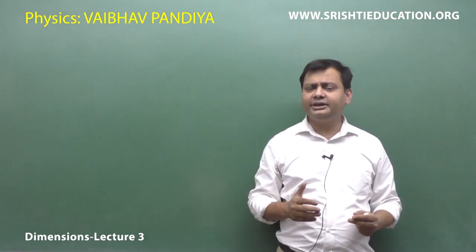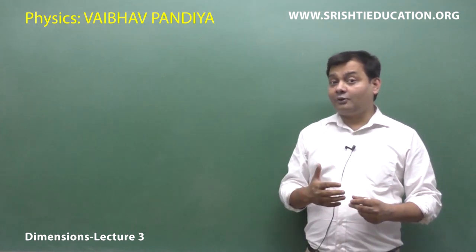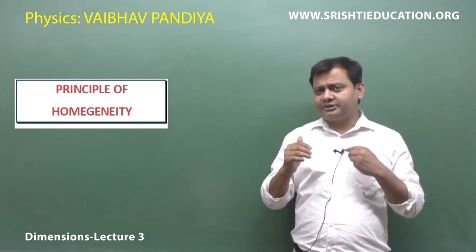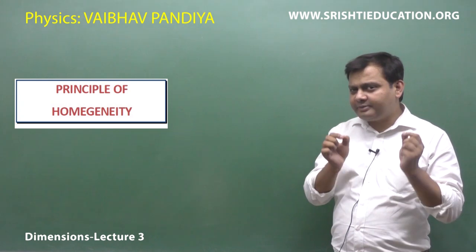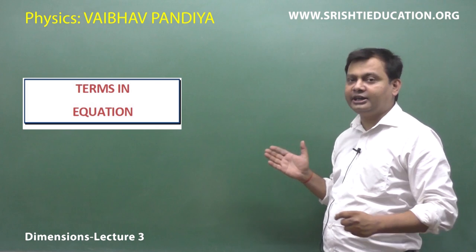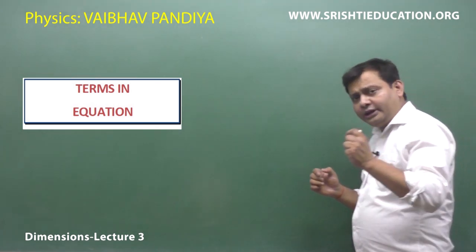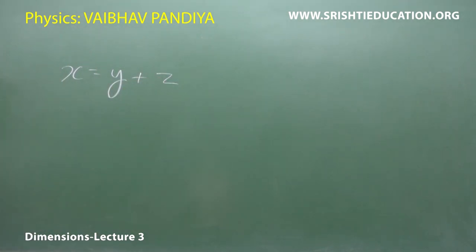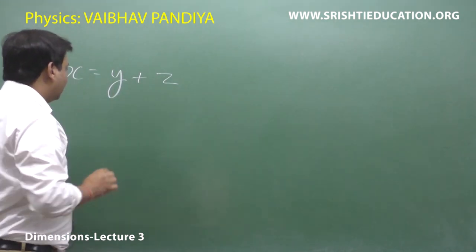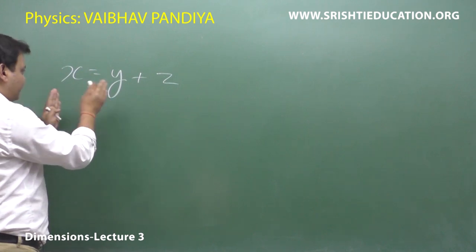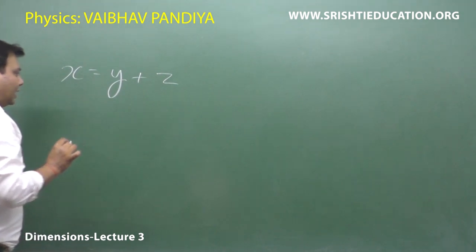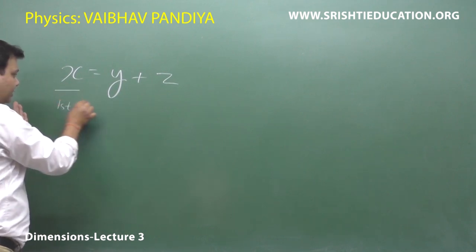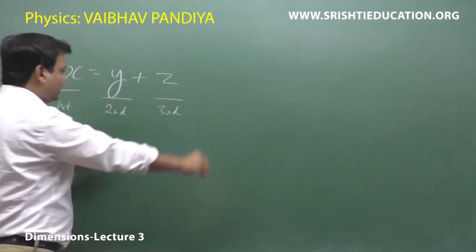We have seen so many dimensional formulas in lectures 1 and 2. Today we will start with the principle of homogeneity. As the name suggests, homogeneity means uniformity. To identify different terms in any equation — say x is equal to y plus z — how many variables are there? Three: x, y, and z. And how many terms are there? Three terms: this is the first term, this is the second term, and this is the third term.